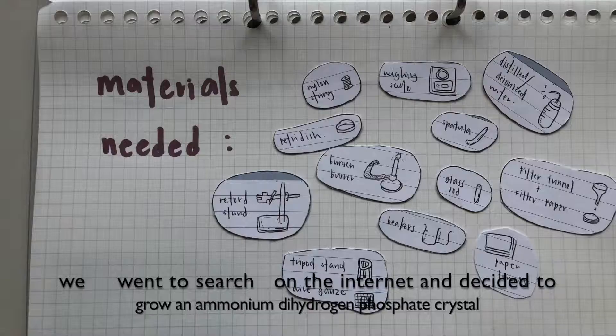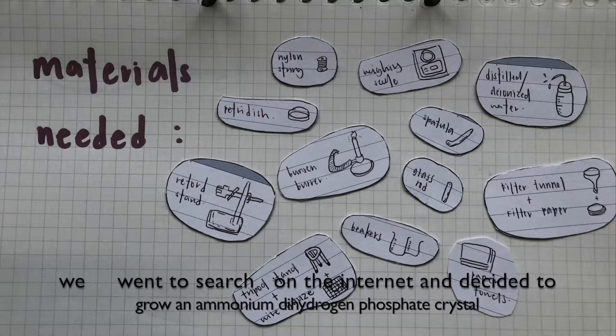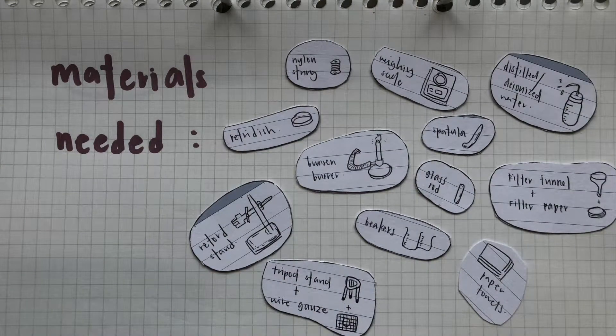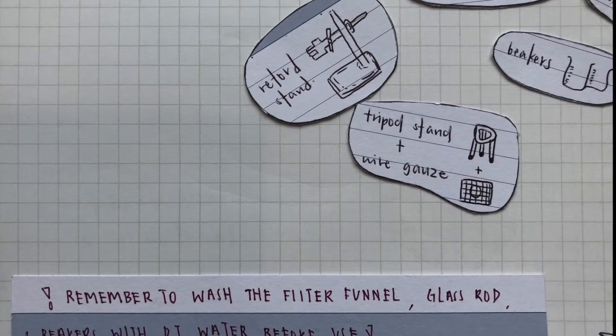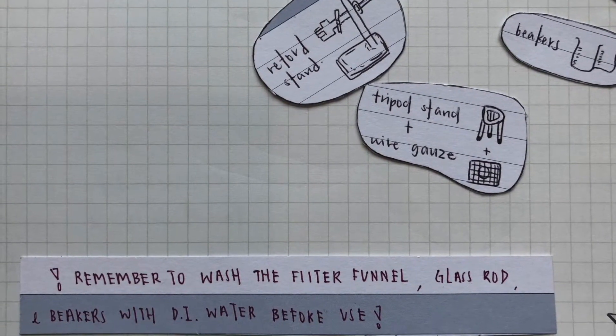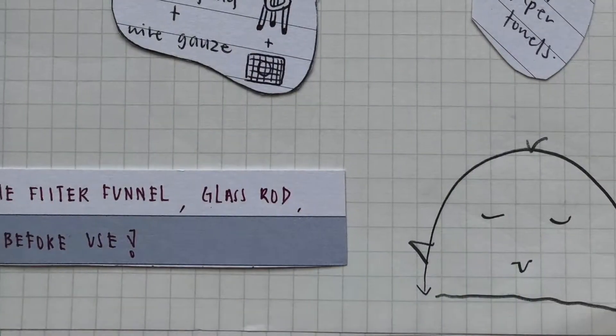We went to search up on the internet and decided to grow an ammonium dihydrogen phosphate crystal. These are the materials needed and remember to wash all materials with deionized water to prevent impurities forming during the crystal growing process.